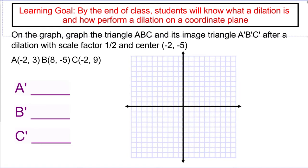Let's take a look at another one, which maybe, in this case, we're doing a dilation of 1/2 instead of 2. So I'm going to first plot my center of dilation, which is at (-2, -5). And I'm going to plot each of my points: A at (-2, 3), B at (8, -5), and C at (2, 9). So let's connect those together. We want a nice triangle. Our job is to scale this down by a factor of 1/2 using the center of dilation over here.